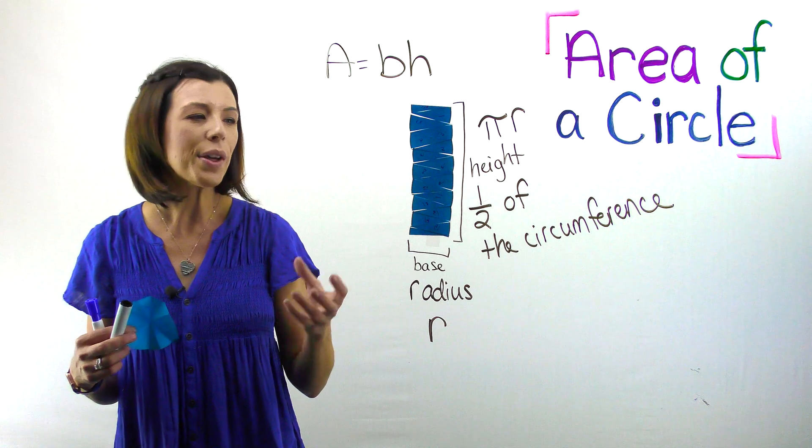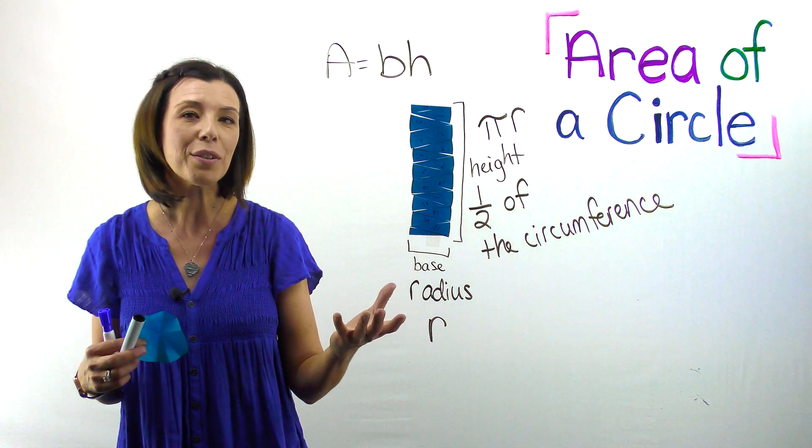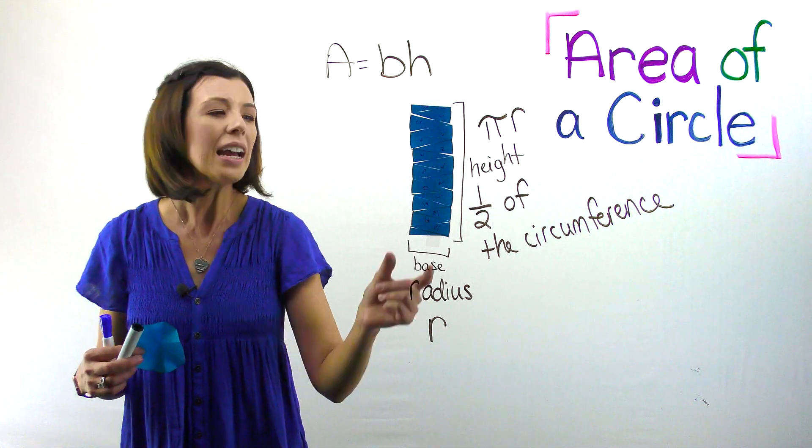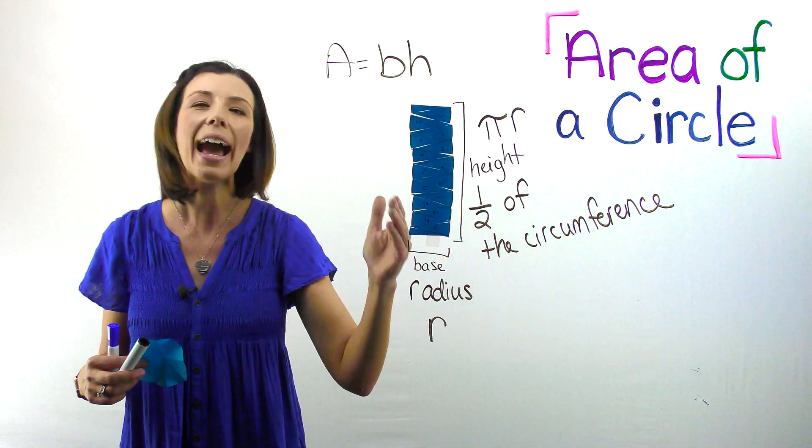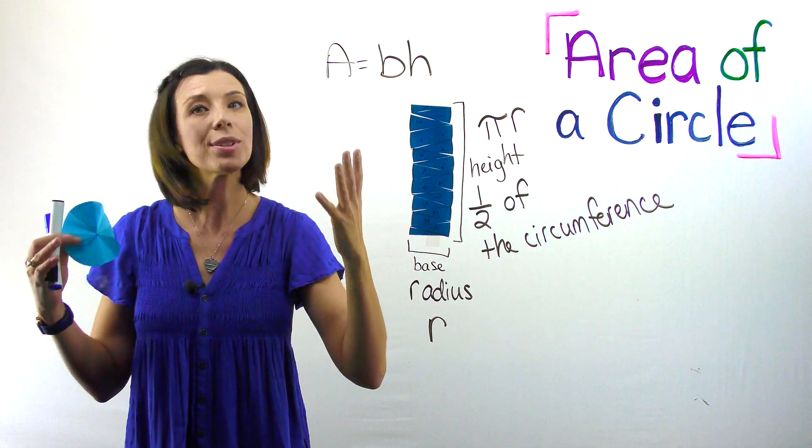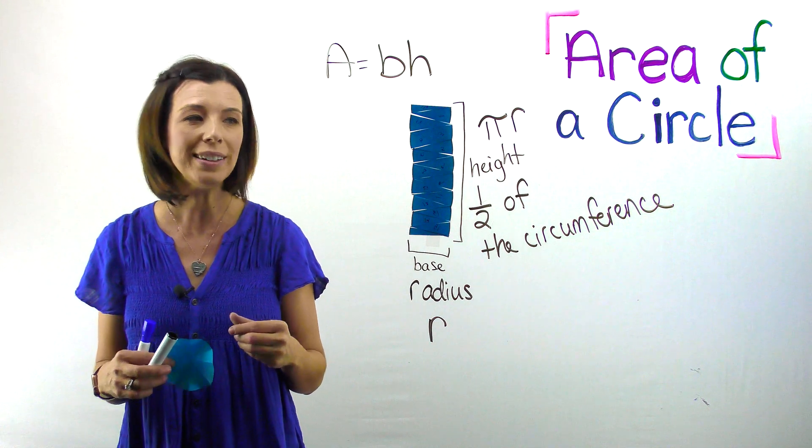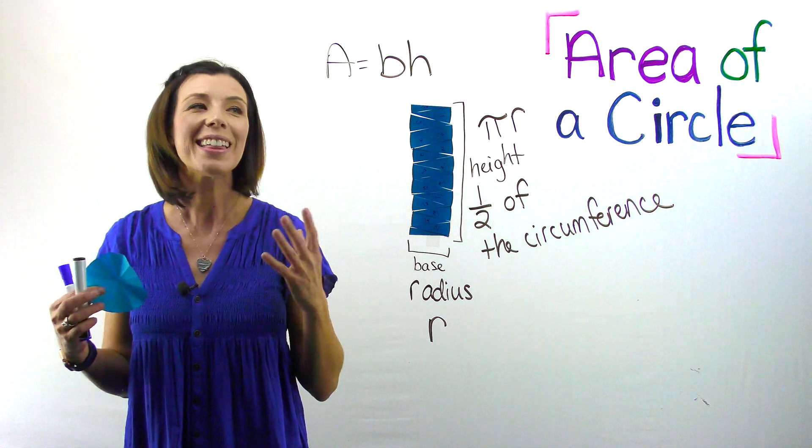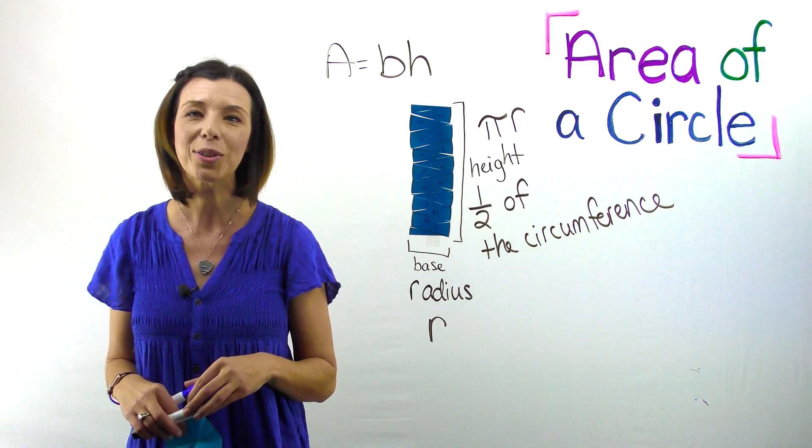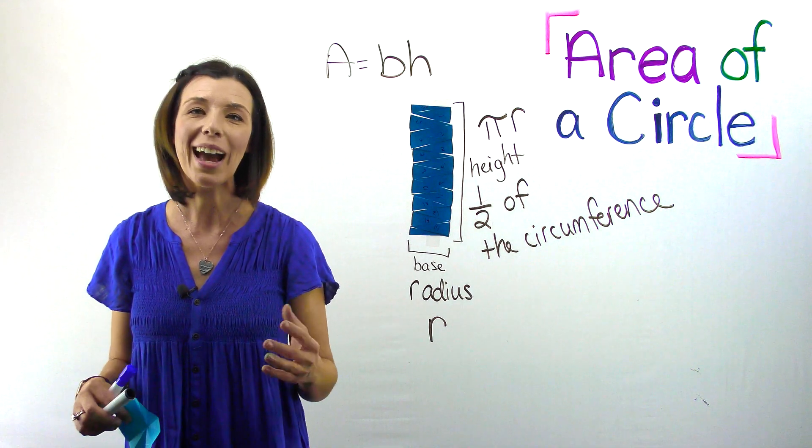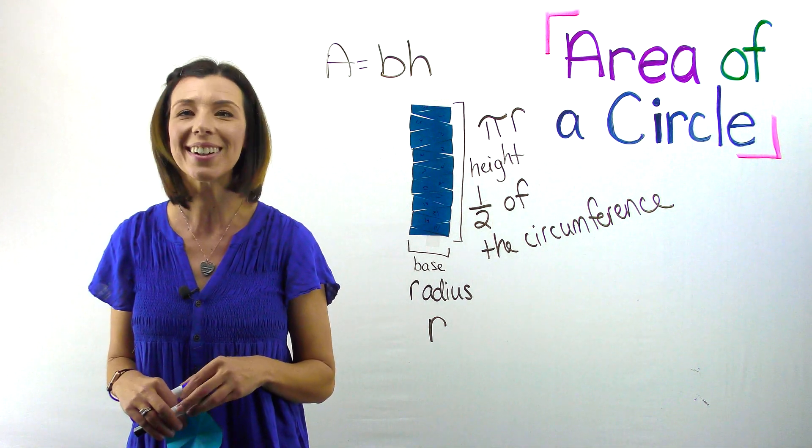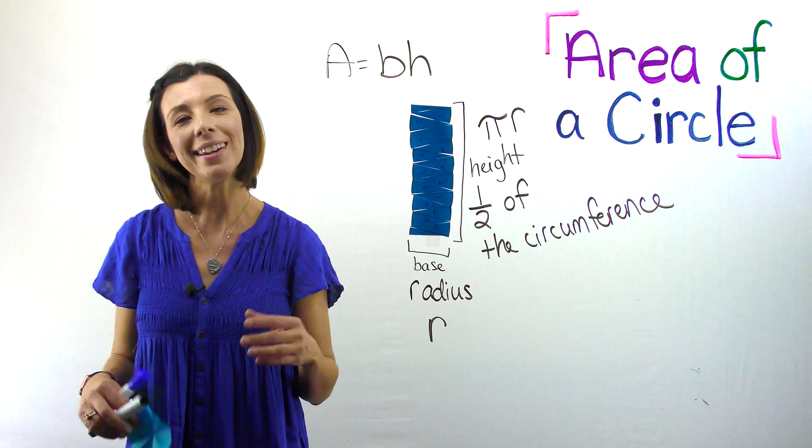Really wrestle with what is the formula for the area of a parallelogram and how is that related to what we did here. The base was the radius. How did we get half of the circumference for the height? Struggle through that. Remember, persist in problem solving. Mathematical practice number one, you can get this. This will give you a better understanding of where the area of a circle comes from and how they derived that formula. I hope you found this video helpful and you've now got a better understanding of how to explain the area of a circle.